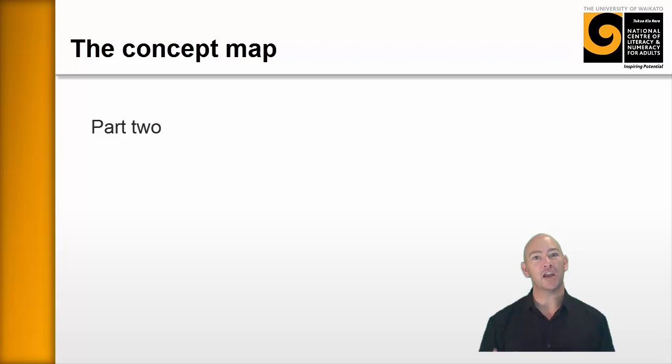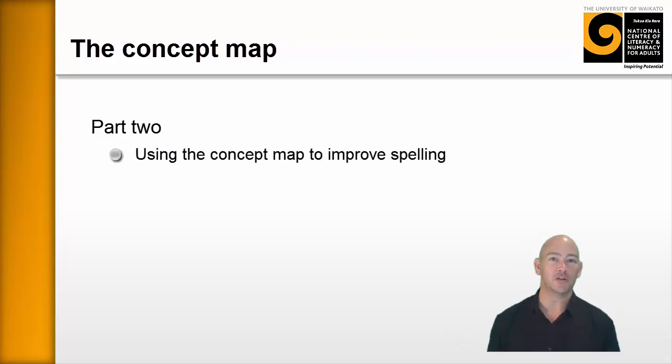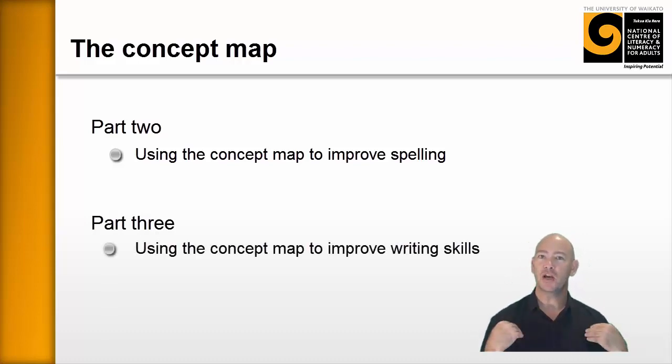In the next part, we're going to look at how to use some of the content that the learners have generated from the concept map to help improve their spelling. And that's just going to be some quick activities that you can use as energizers in the classroom. But in part three, we're going to look at how to use what the learners have generated to help develop their writing skills. We're going to sequence it, we're going to put it into a structure, and that's going to further help the learners develop writing skills and be able to retain and recall the information that they're learning.